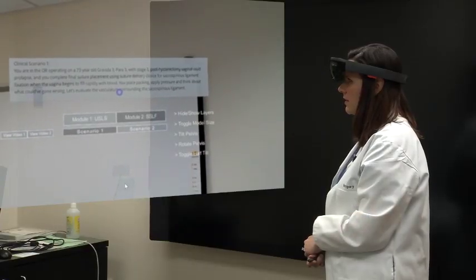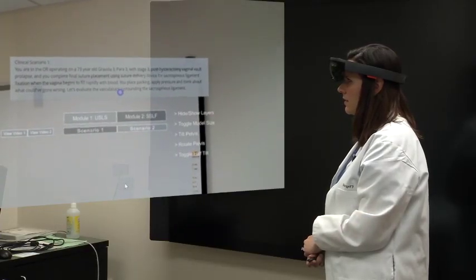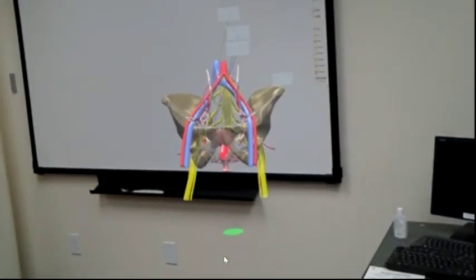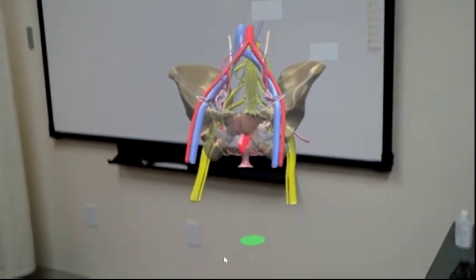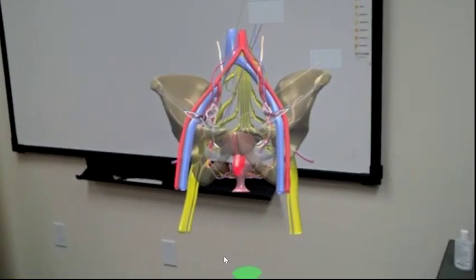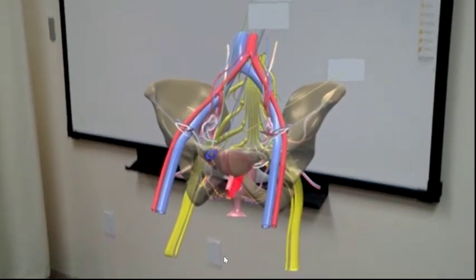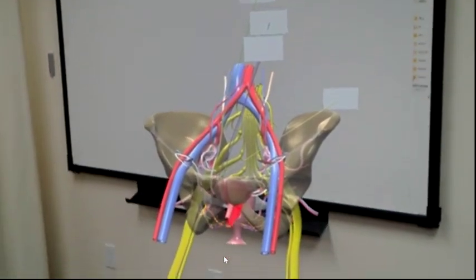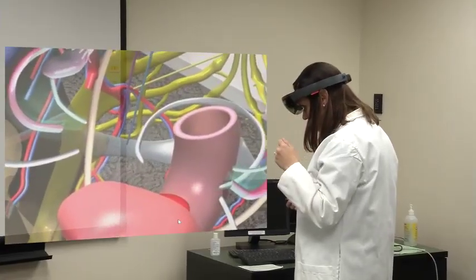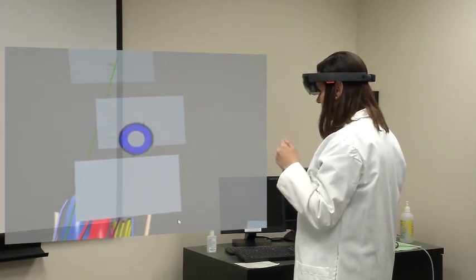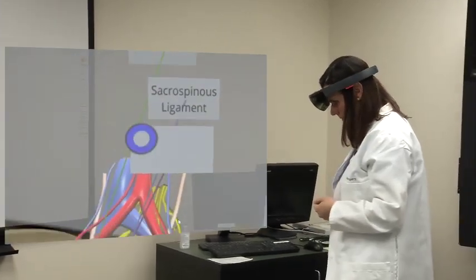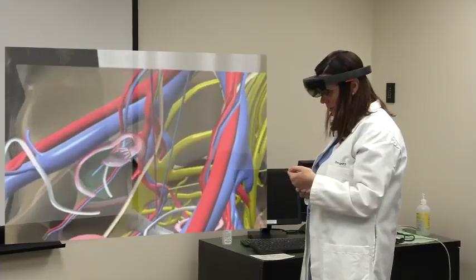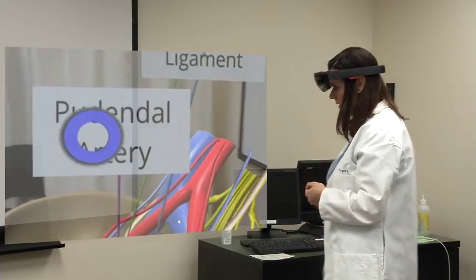You are in the OR and you complete final suture placement using suture delivery device for sacrospinous ligament fixation. When the vagina begins to fill rapidly with blood, you place packing, apply pressure and think about what could have gone wrong. Let's evaluate the vasculature surrounding the sacrospinous ligament. Identify the following structures on the model. Sacrospinous ligament. Yes. Pudendal artery. Yes. Well done.